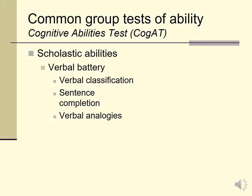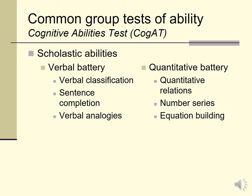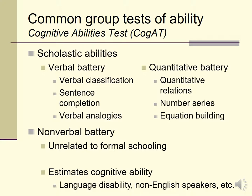The CogAT measures school abilities including verbal things like verbal classification, sentence completion, and analogies; quantitative things like number series and equation building; and it also has a nonverbal battery designed to be unrelated to formal schooling, thought to be a good way to estimate cognitive ability among people who are language-disabled and non-English speaking. The verbal subtests sum toward a verbal index, the quantitative subtests toward a quantitative index, and the nonverbal battery looks a lot like matrix tasks — so you don't need a lot of schooling or background knowledge to complete them.